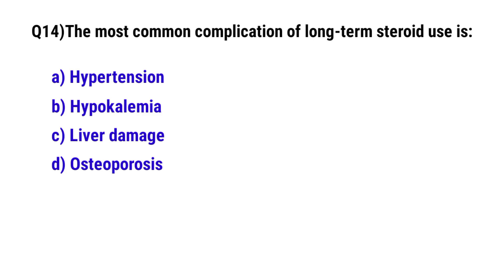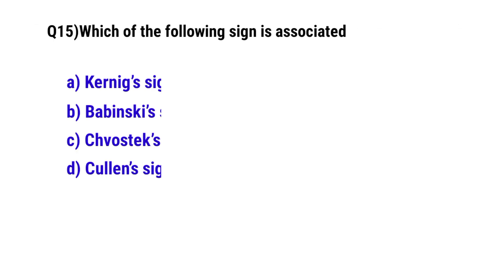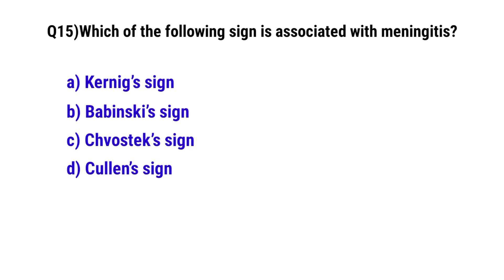Question number 14: The most common complication of long-term steroid use is? The correct option is D: Osteoporosis. Question number 15: Which of the following signs is associated with meningitis? The correct option is A: Kernig's sign.